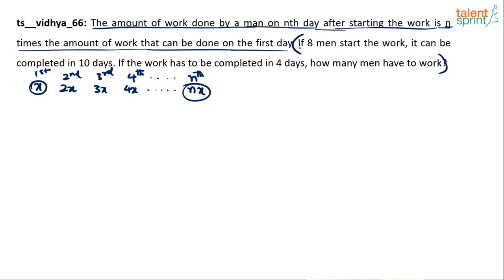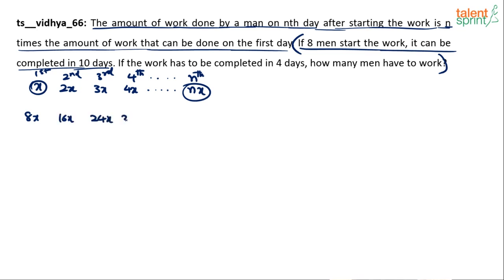Now read the first part of the question: if eight men start the work it can be completed in 10 days. Let's first figure out the total work done in 10 days. Each man does x on the first day, so eight men will do 8x on the first day. On the second day they do 16x, then 24x, then 32x, and on the 10th day they will do 80x.